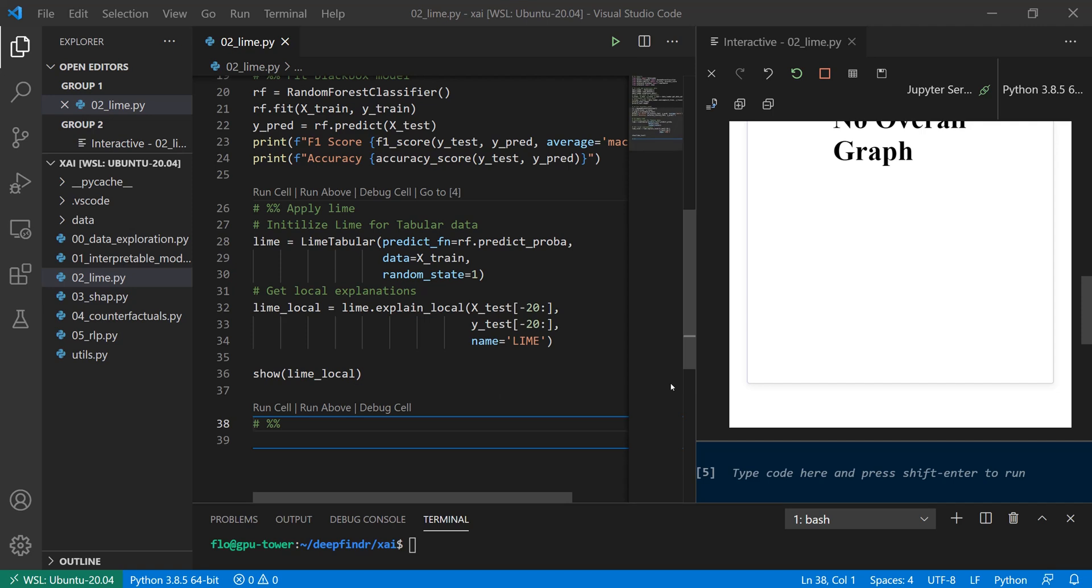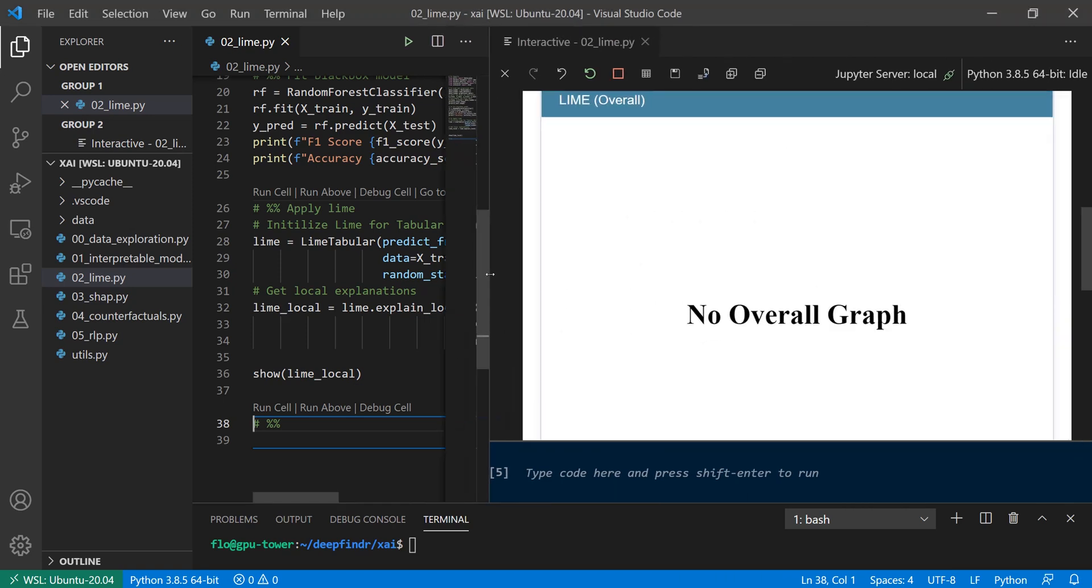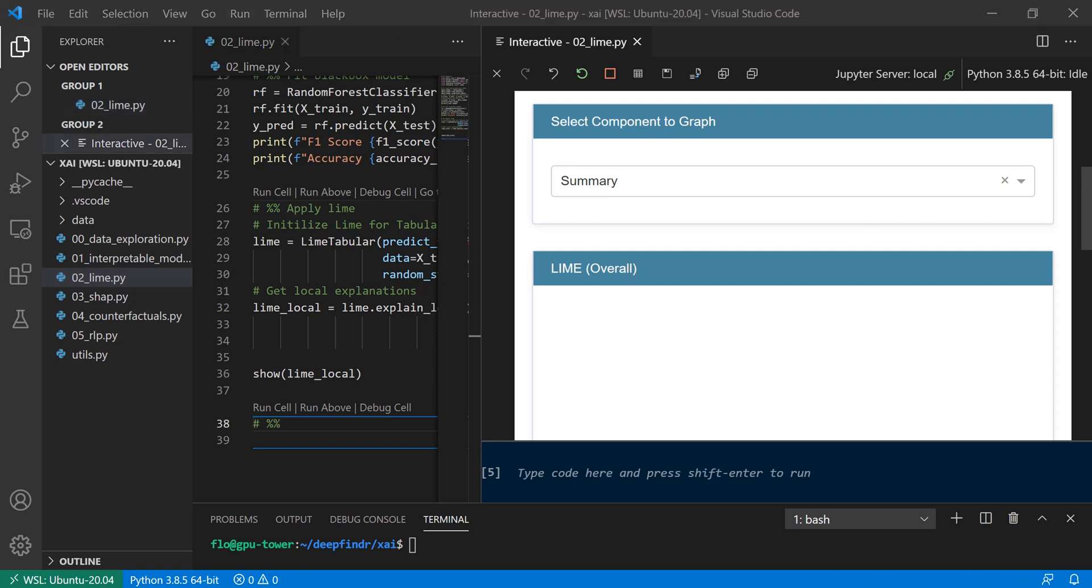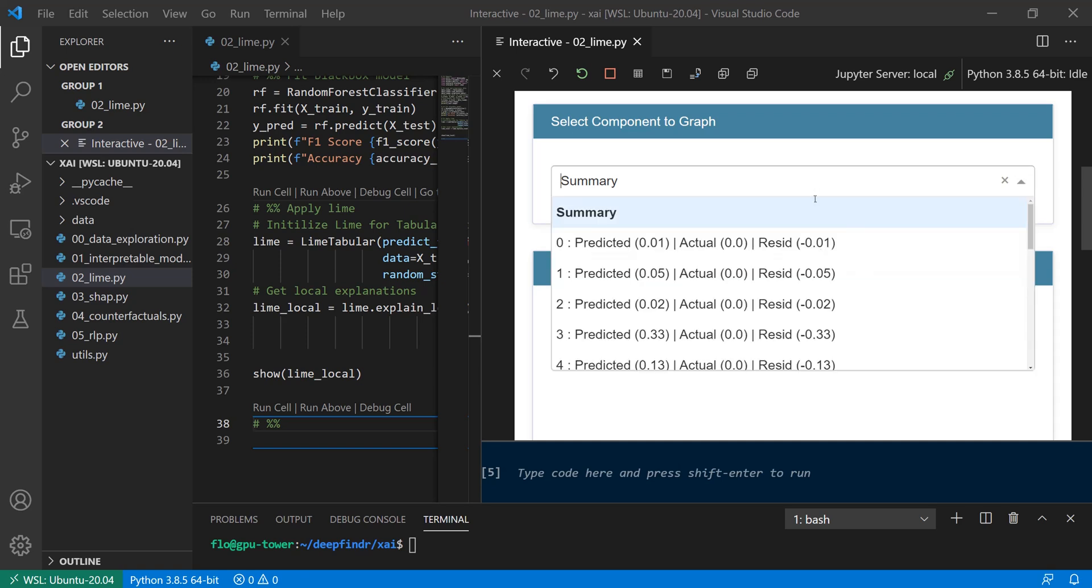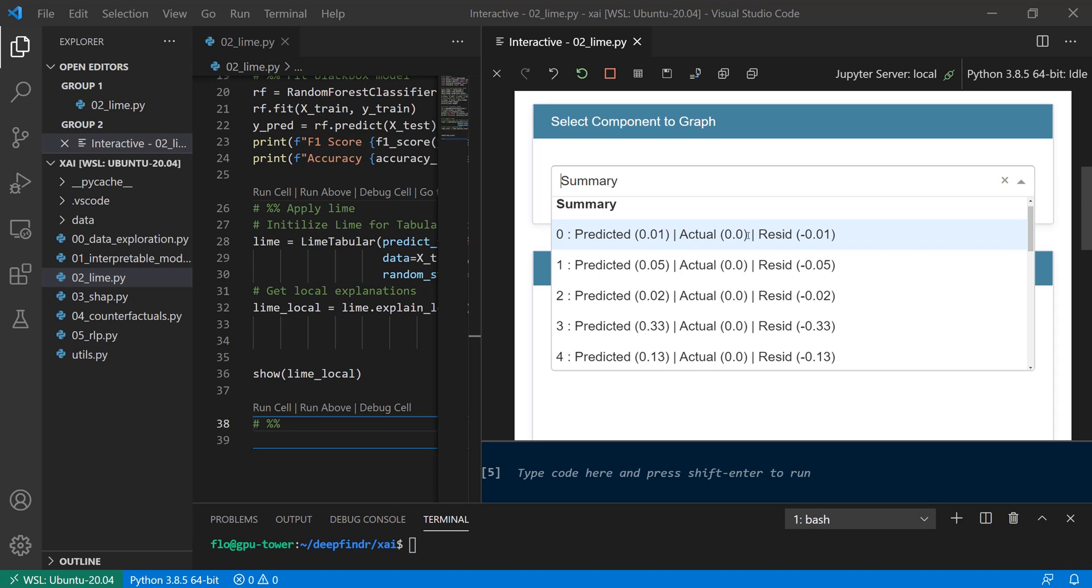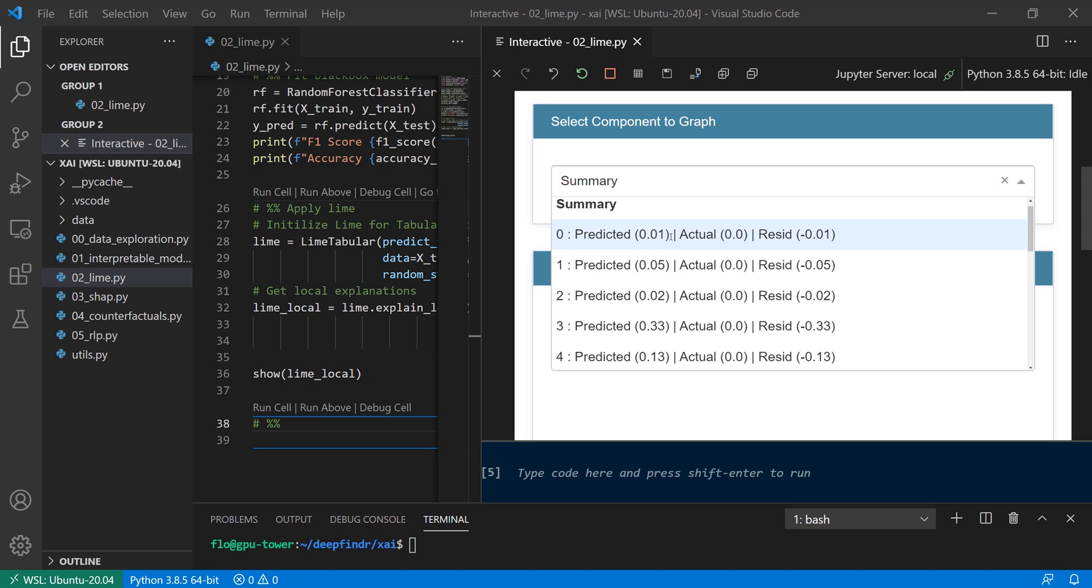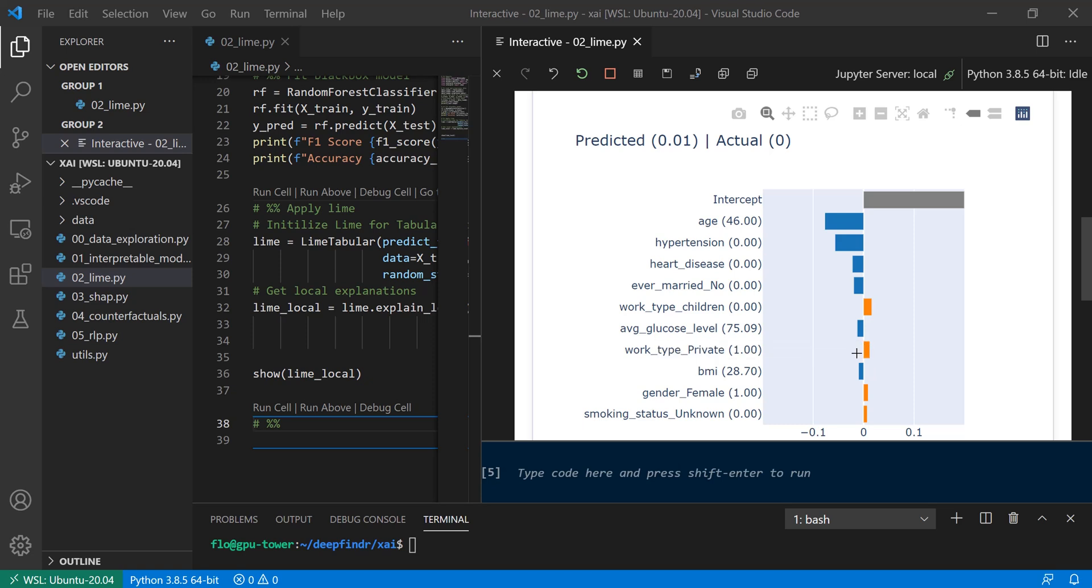Okay, so now it's done and after calling this show function on our local explanations, we get this interactive graph which comes from this interpret library. So we've trained our random forest classifier with 94% accuracy, but can we be sure that the model really uses the right features and works as intended? And to better understand that, we can now have a look at individual predictions. And here we see we have, for example, an actual value of zero, which means no stroke, and we have predicted 0.01 as prediction probability. So that's also pretty close to zero. And the reason for that is, so these are the features or the feature values used by our model. And the age has a strongly negative impact because the age is relatively low for a stroke prediction. And that's why the prediction is shifted towards no stroke. Also that the person has no hypertension, no heart disease and so on. These are reasons why the model says this person is not getting a stroke.